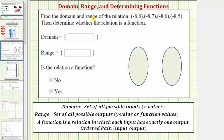When we have a relation given as a set of ordered pairs, for each ordered pair the first value is the input and the second value is the corresponding output. And therefore, because the domain is a set of all possible inputs, the domain is going to be the set containing all of the first values in the set of ordered pairs.